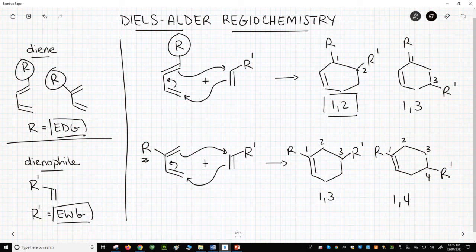As it turns out, on the top, the 1-2 product is favored. On the bottom, 1-4 is favored. Let's see how this works.